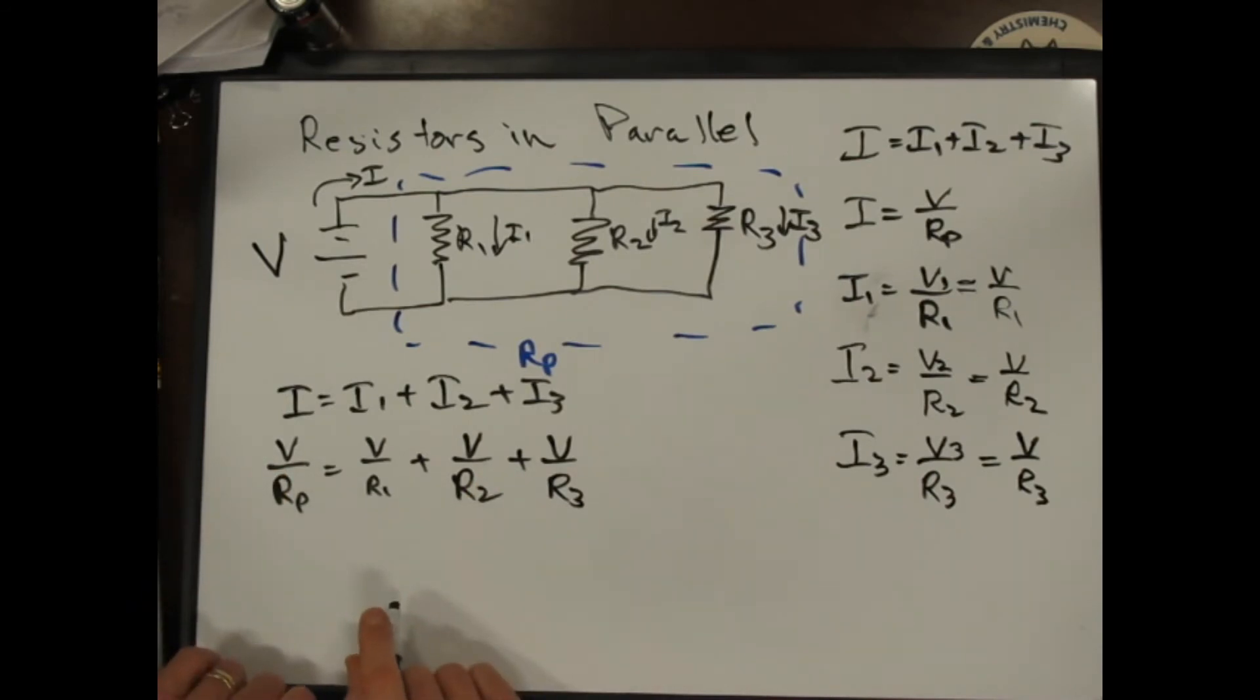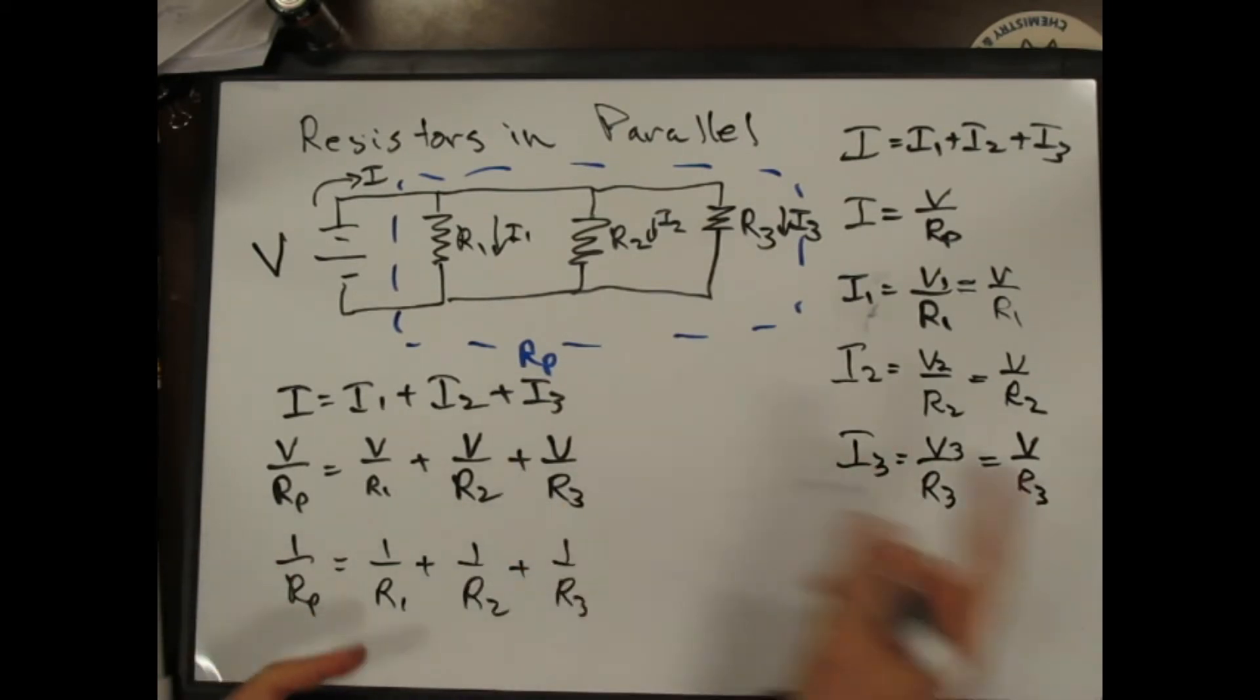Everybody's got a V. So this just gives us 1 over R parallel is equal to 1 over R1 plus 1 over R2 plus 1 over R3. Of course, if we had 50 of them, it would just be plus all the others.